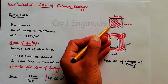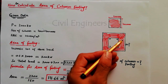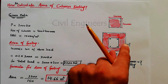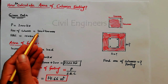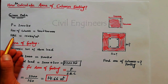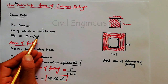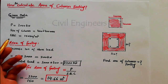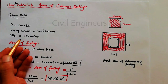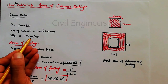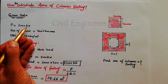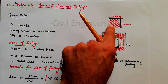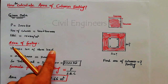The column size is 400mm by 400mm — since it is square, each side is equal. The soil bearing capacity (SBC) is 150 kilonewtons per meter square. Remember, different types of soil have different bearing capacities. So with a load of 2000 kN, column size 400x400mm, and SBC of 150 kN/m², we need to find the area of footing.